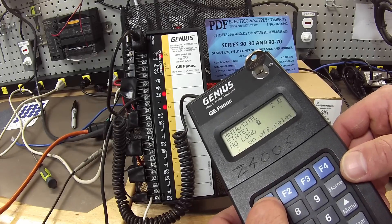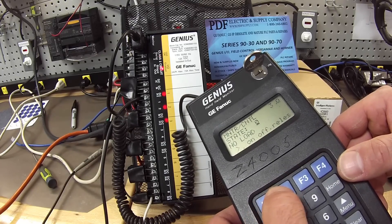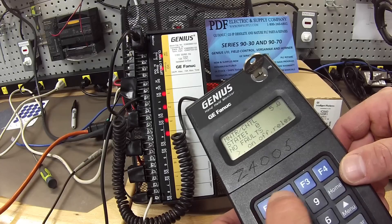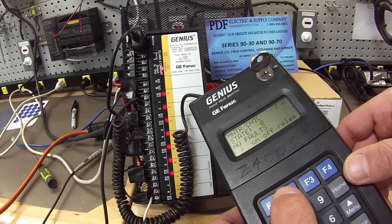Then I'm going to hit F1 to go to the next output. F2, turn it on. F1 for the next output. F2 to turn it on, and so on. You want to do that with all the channels through 8.